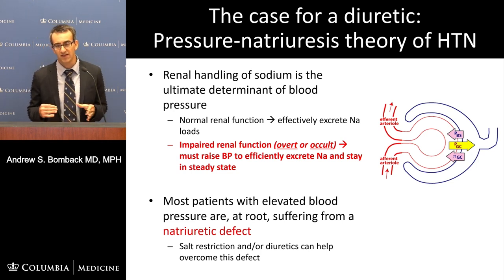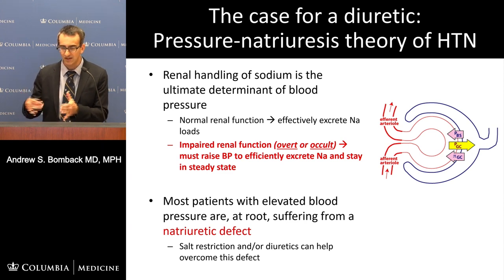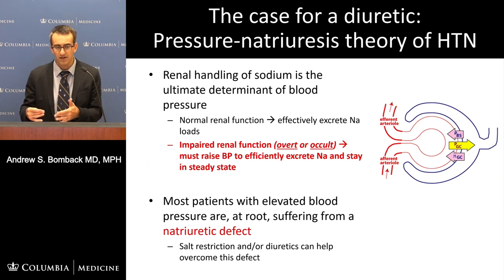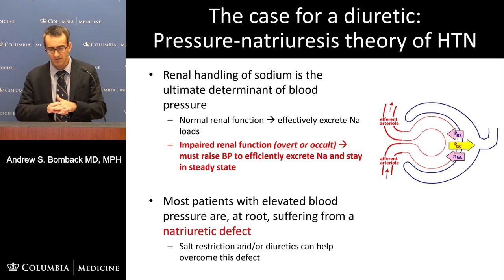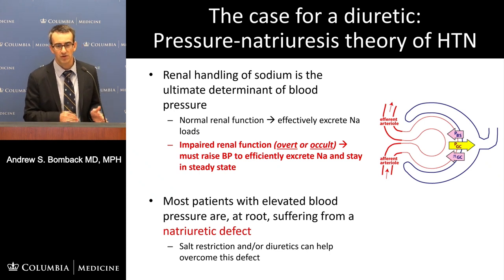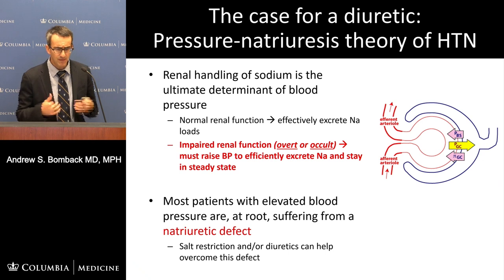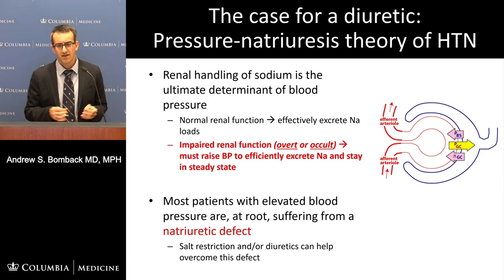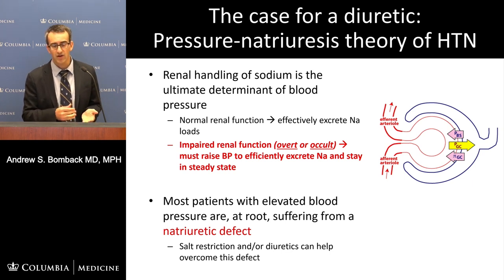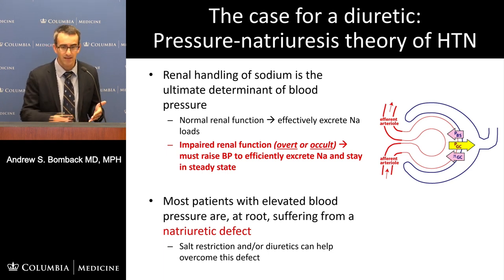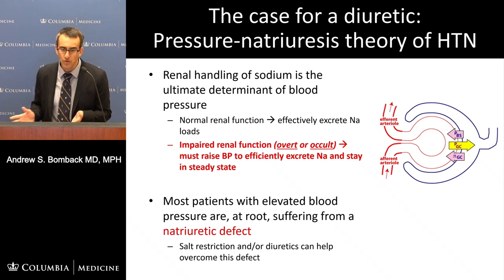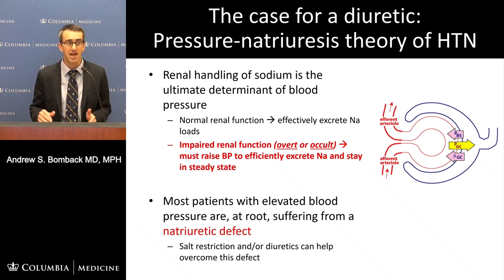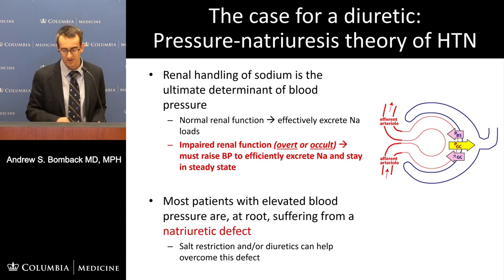The theory says: you begin with a defect in excreting salt — a natriuretic defect. In response, you raise peripheral blood pressure so you can filter out more salt through the nephron and keep the body in net even salt balance, at the cost of being hypertensive. That's why salt restriction or diuretics are such a logical choice — you're removing the initial salt load that can't be excreted, or giving the kidney a boost in excreting sodium to achieve salt balance at a better blood pressure.